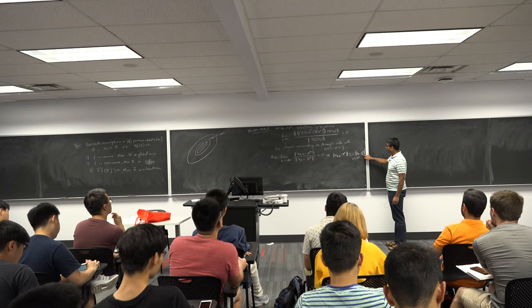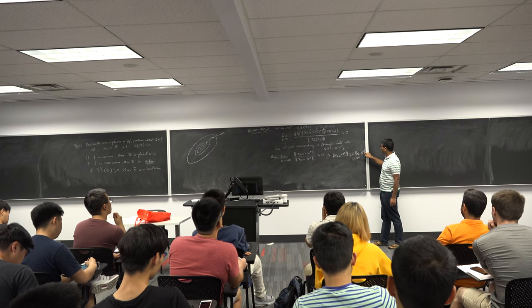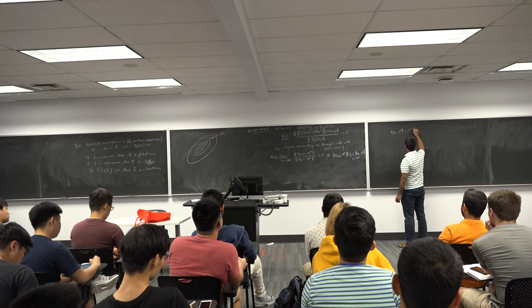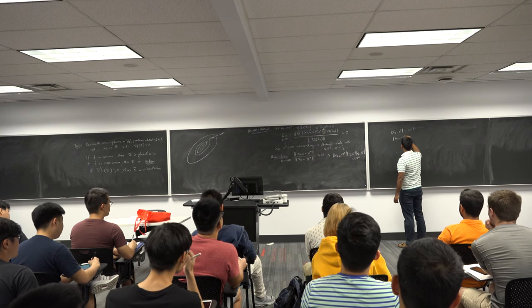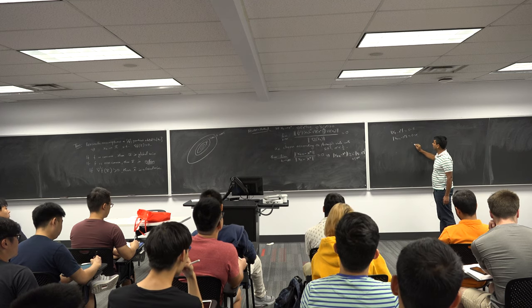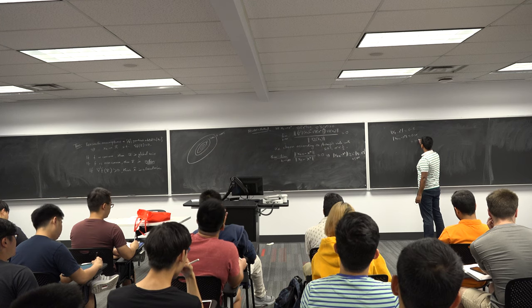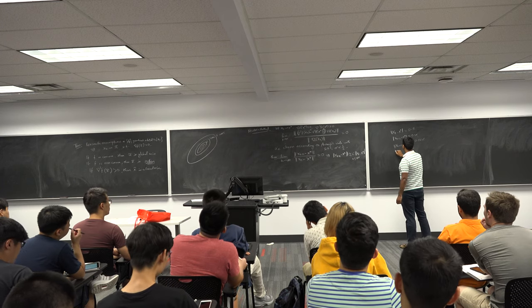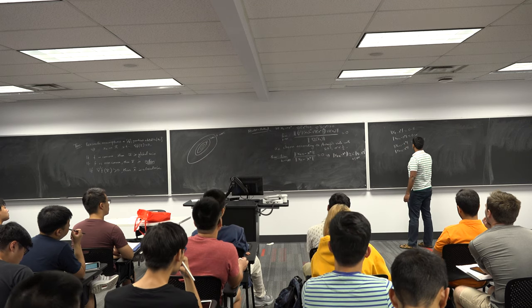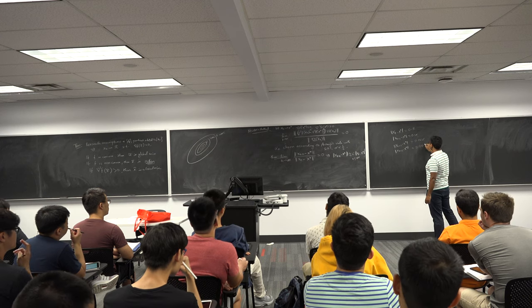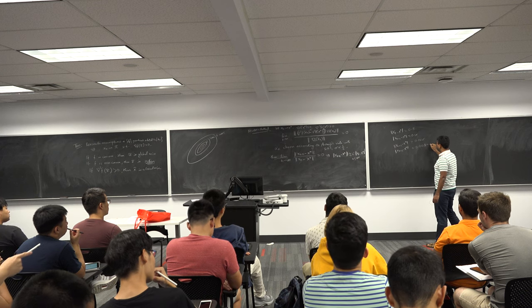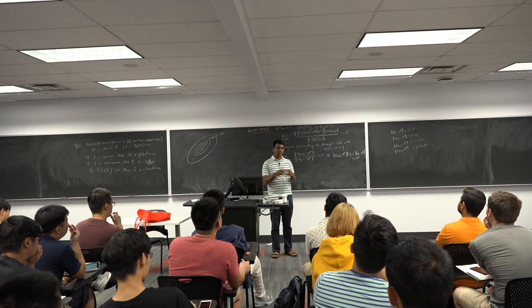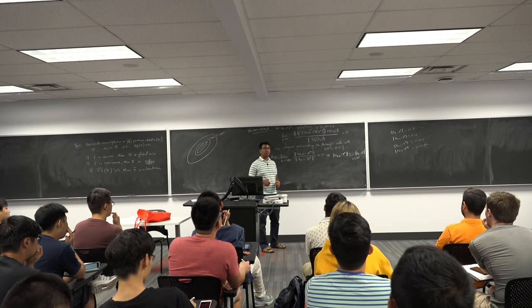If x_k is very close to x_star, then x_{k+1} minus x_star is an order of magnitude closer. For example, if x_k minus x_star equals 0.5, then x_{k+1} minus x_star is 0.25, then x_{k+2} minus x_star is 0.0625, and x_{k+3} minus x_star is even smaller — about 0.0036. This is known as super-linear convergence, which means it converges very, very fast as soon as x_k gets closer and closer to x_star.